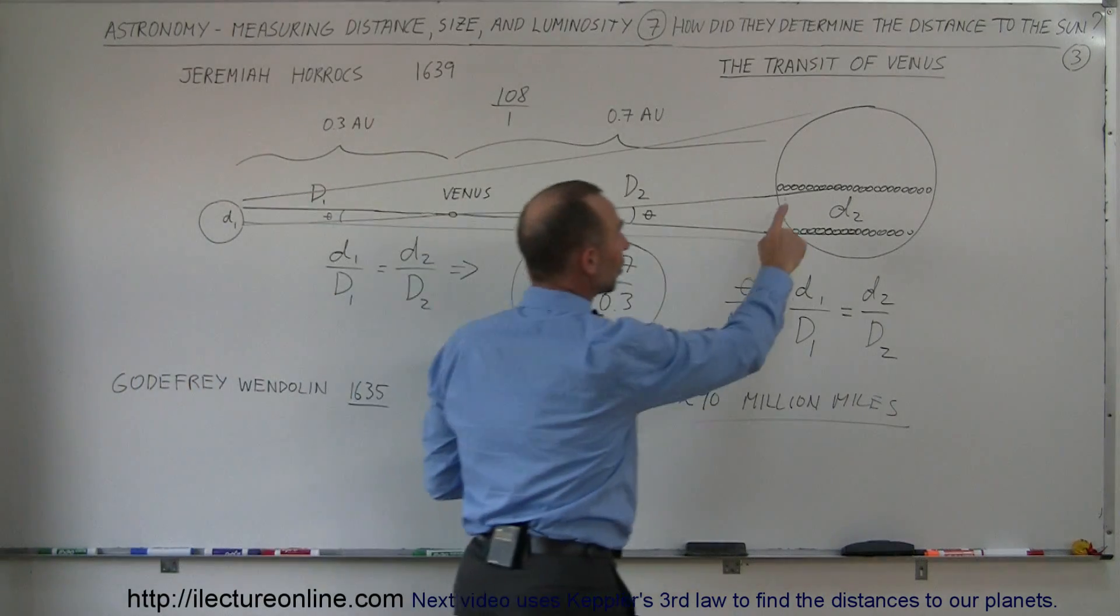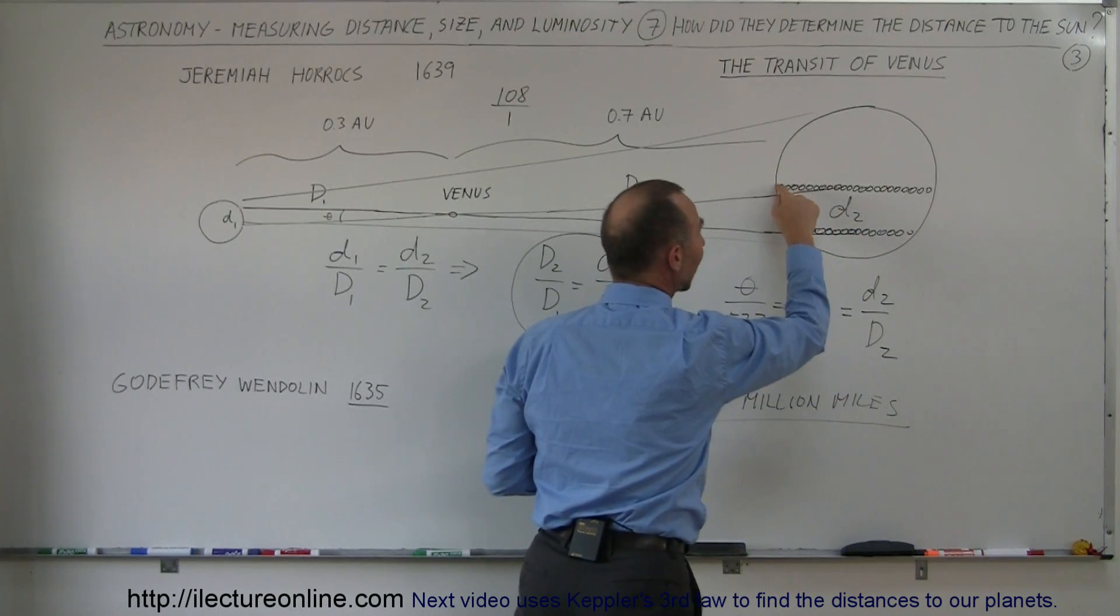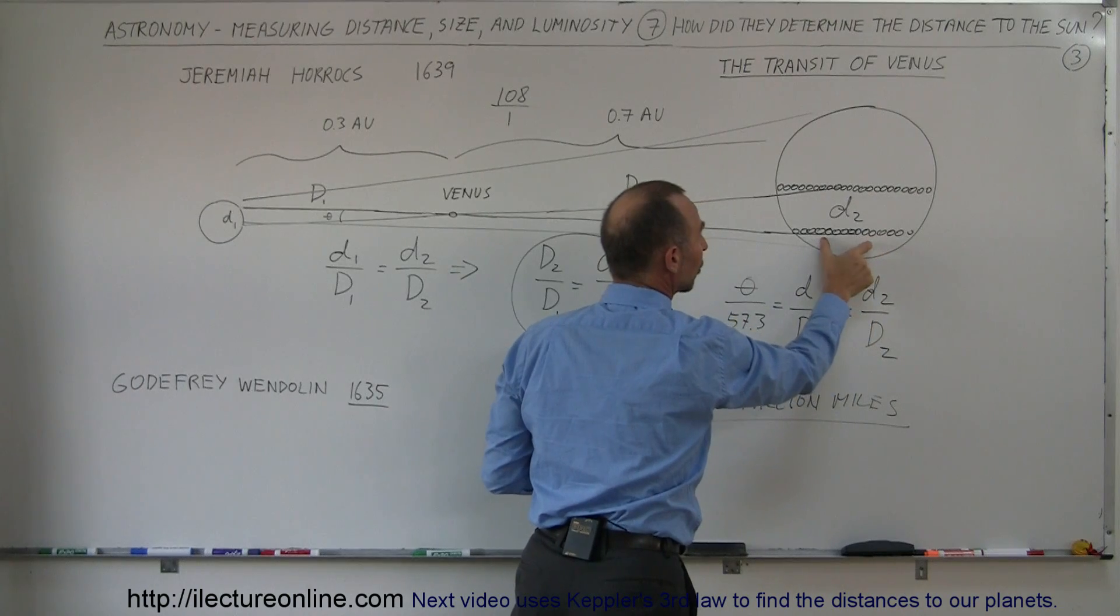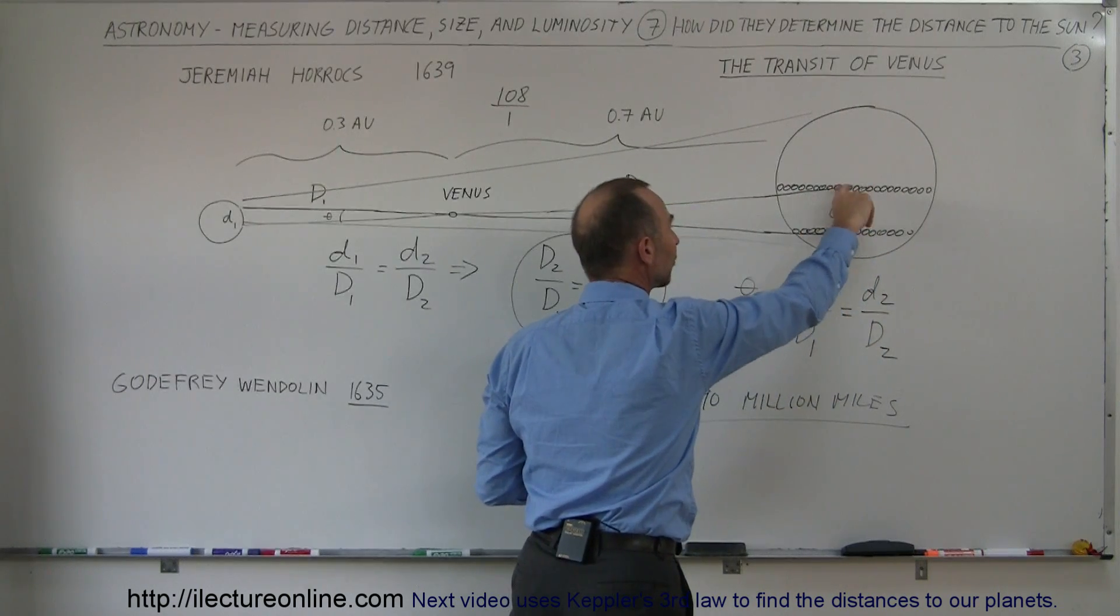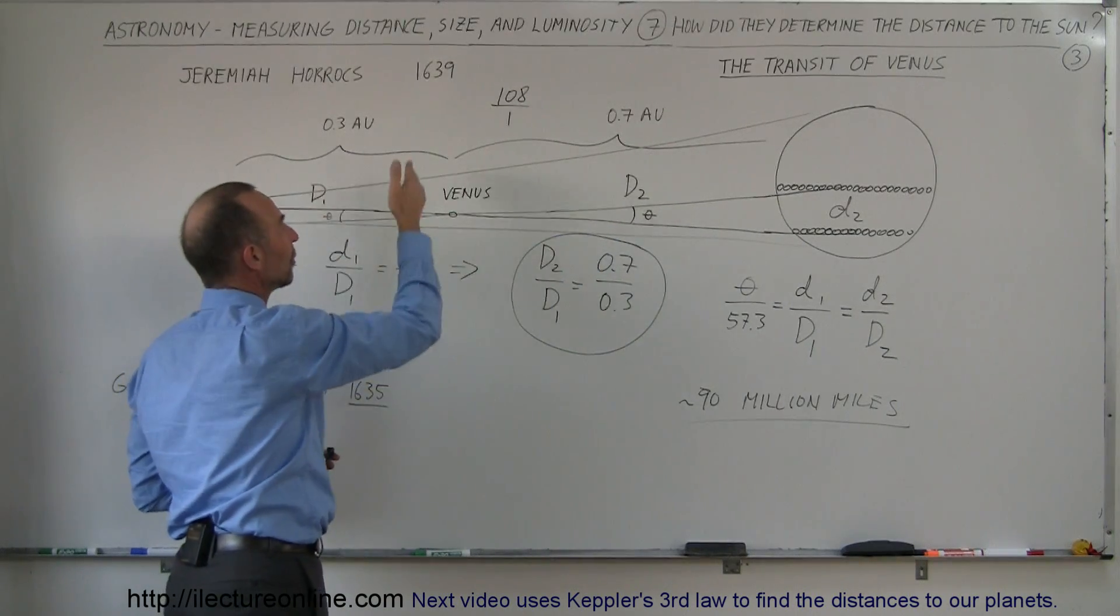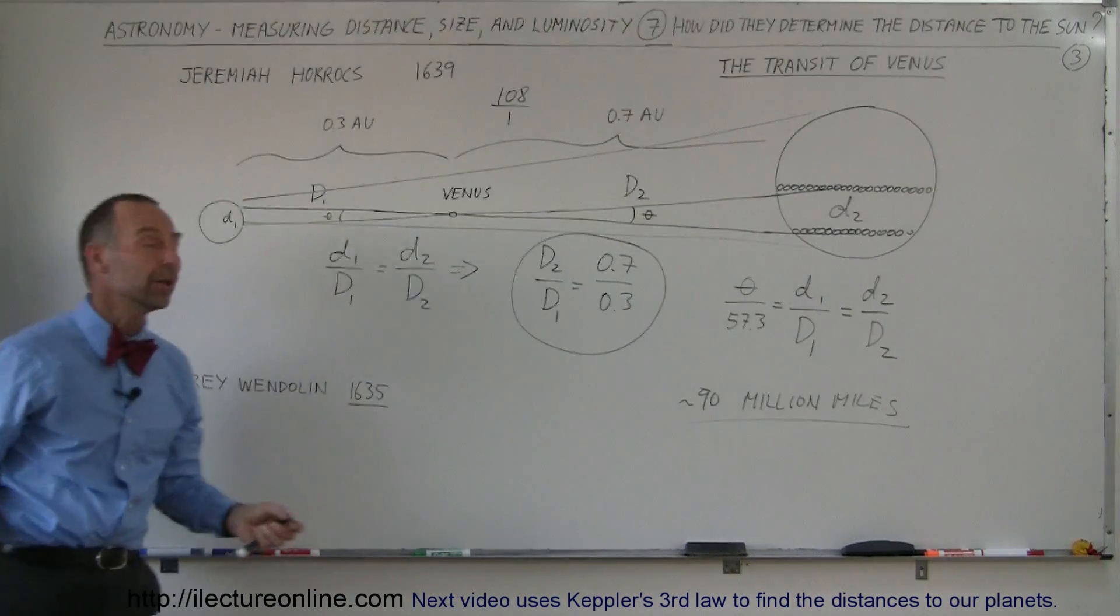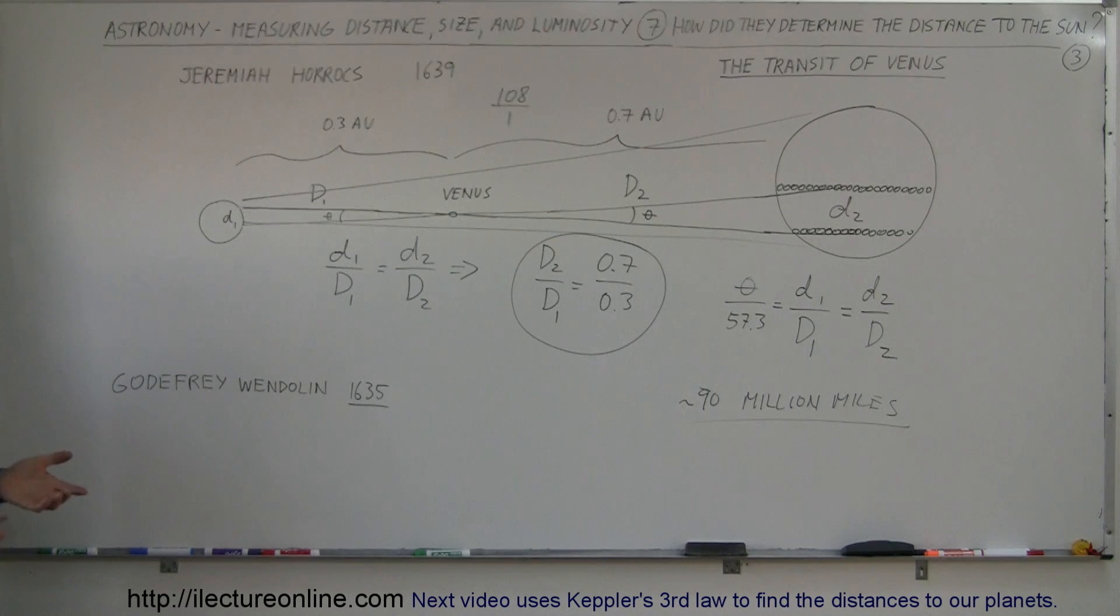Just imagine, they measured the time that it took for Venus to go across the disk. From that they knew exactly from geometry where that had to occur relative to each other. Now from that they were able to figure out this angle. And from that angle and the ratios of distances between Venus and the Sun and Venus to the Earth, they were able to figure out the distance to the Sun. An amazing feat. But that really set us onto the path to understanding our solar system, and from that the rest of the universe. So kudos to whoever figured that out. But Jeremiah Horrocks was very instrumental in figuring out this method and how far it was to the Sun.